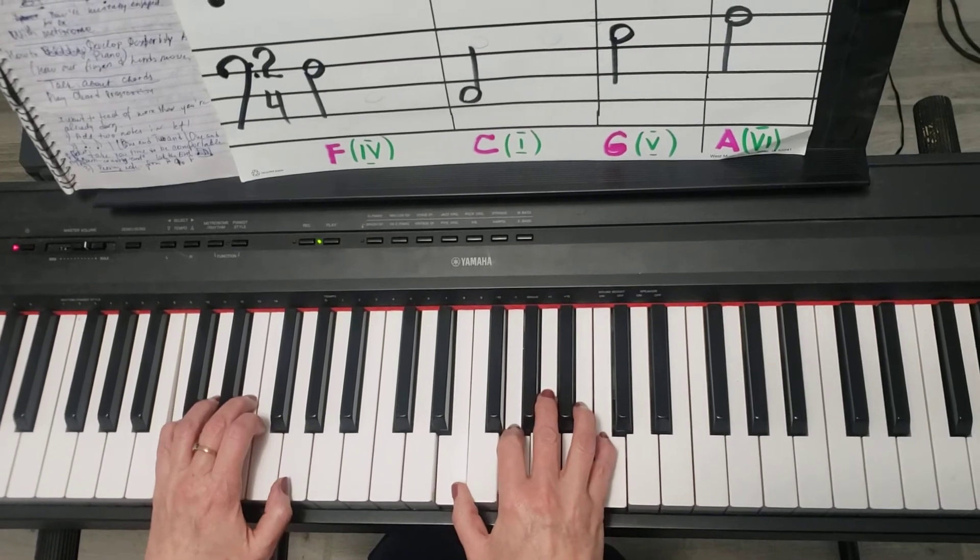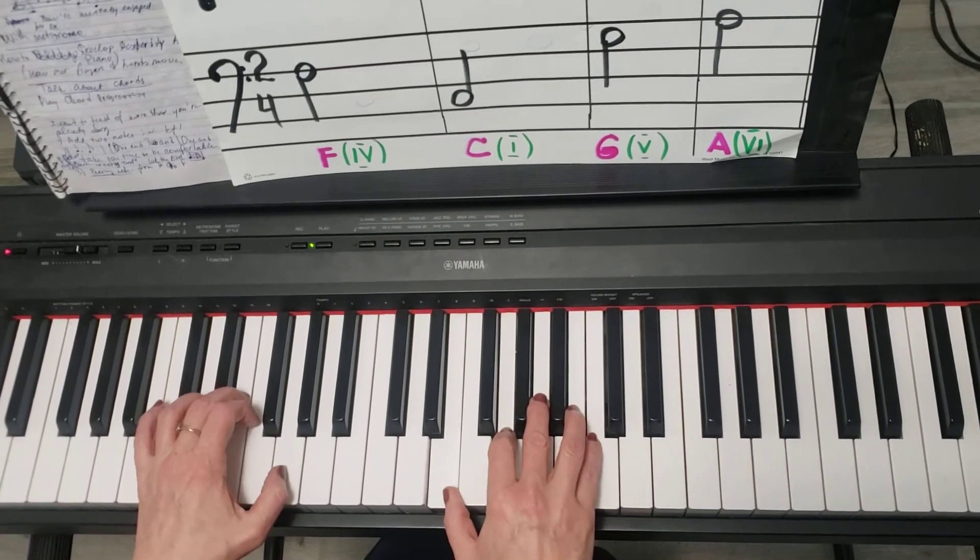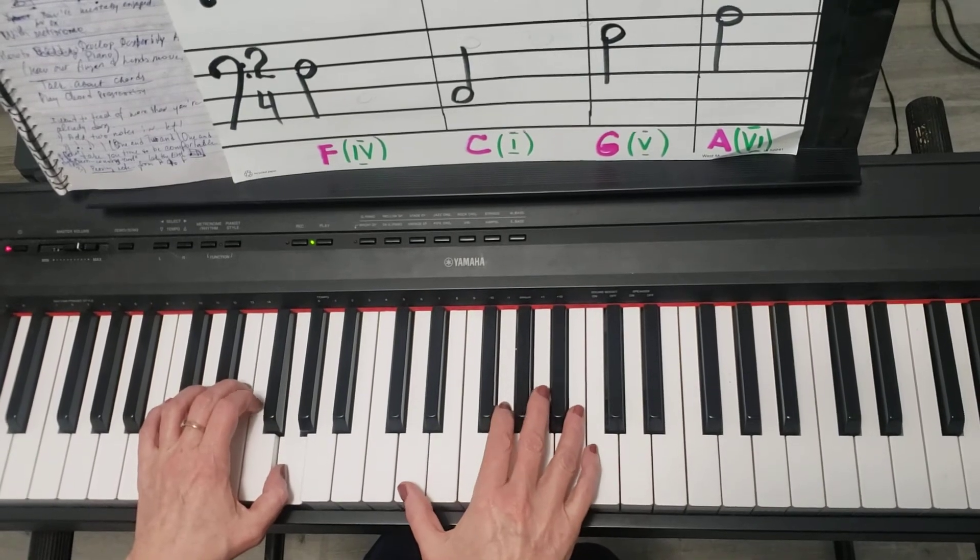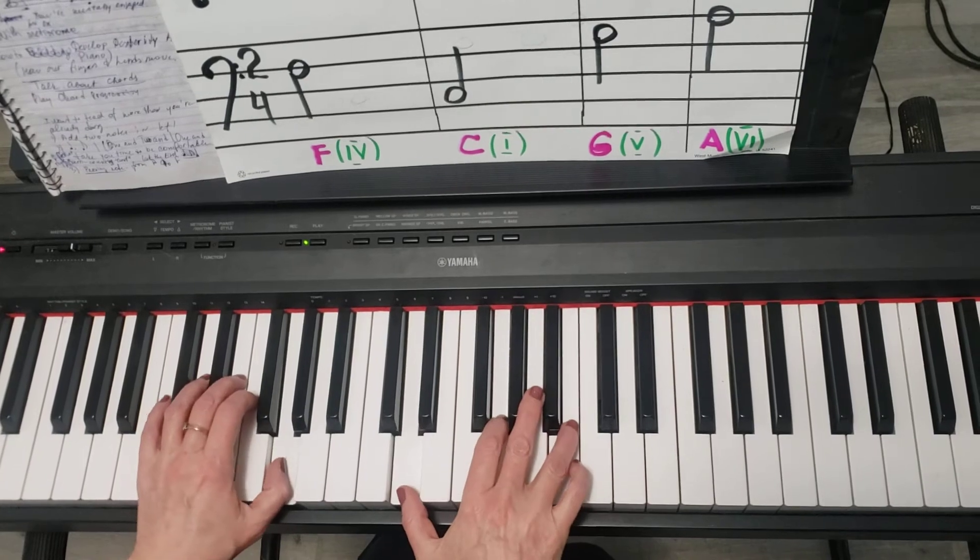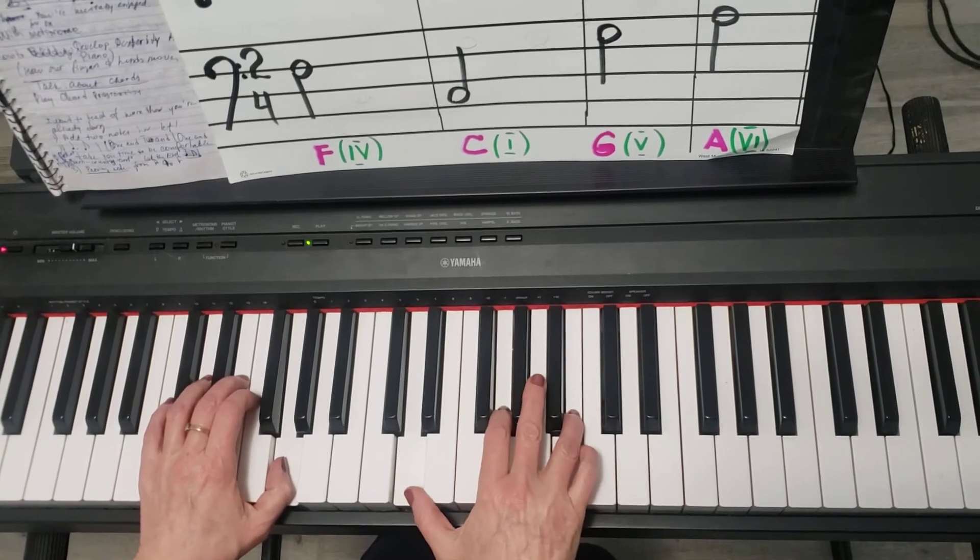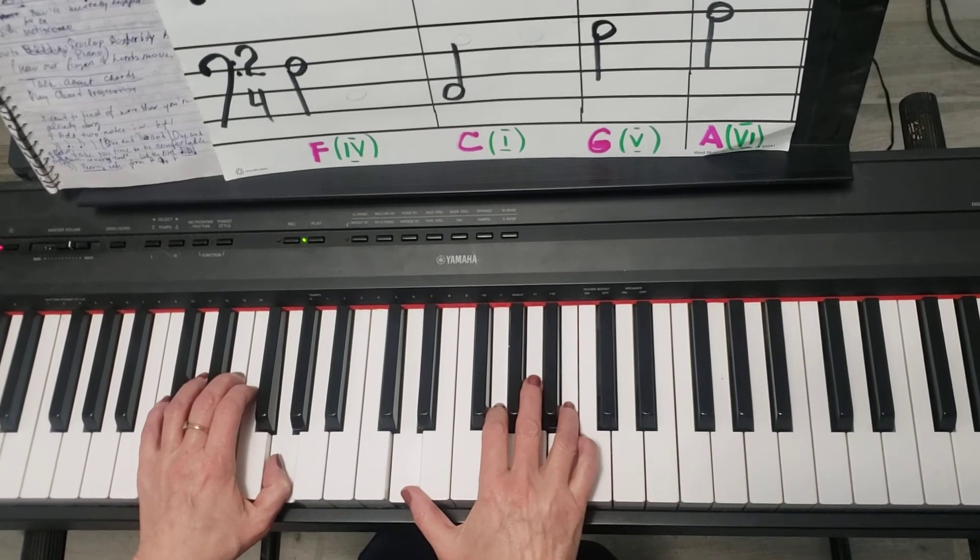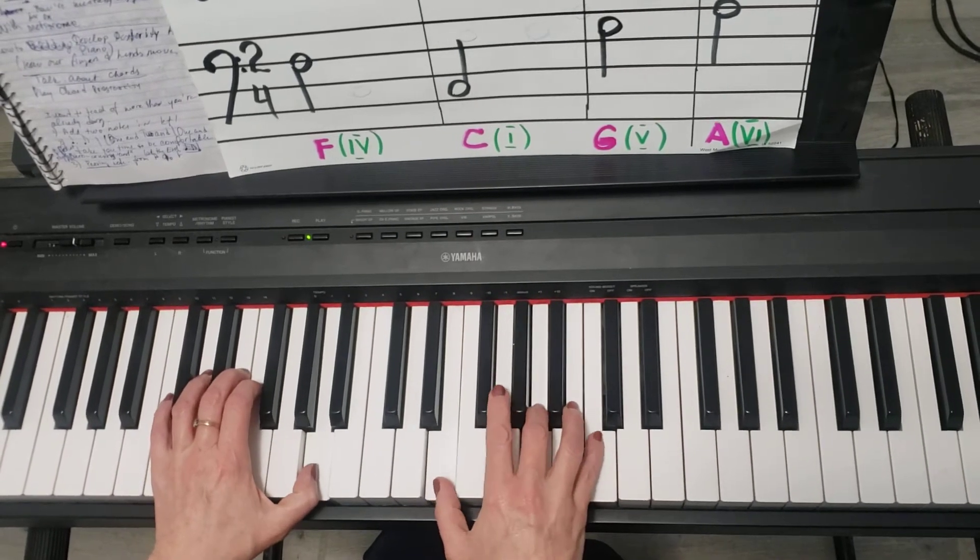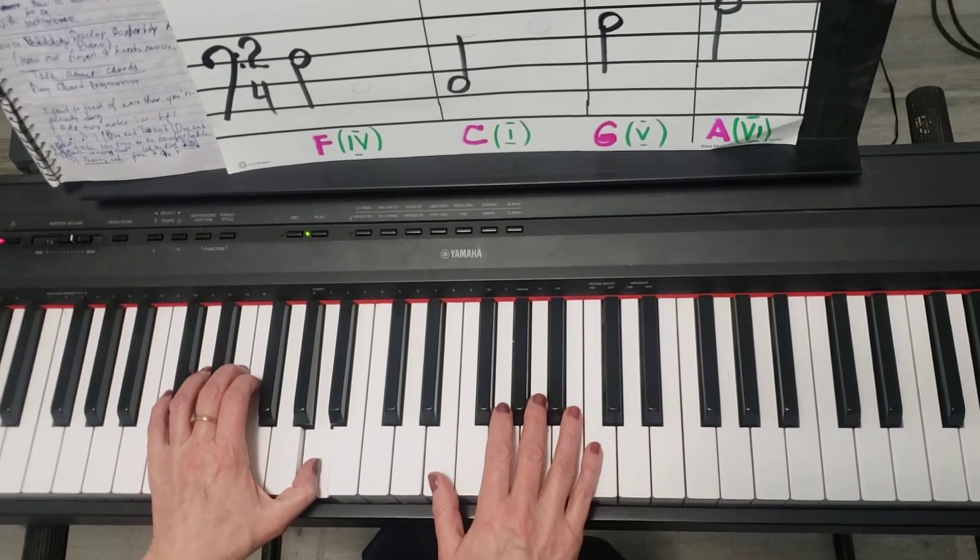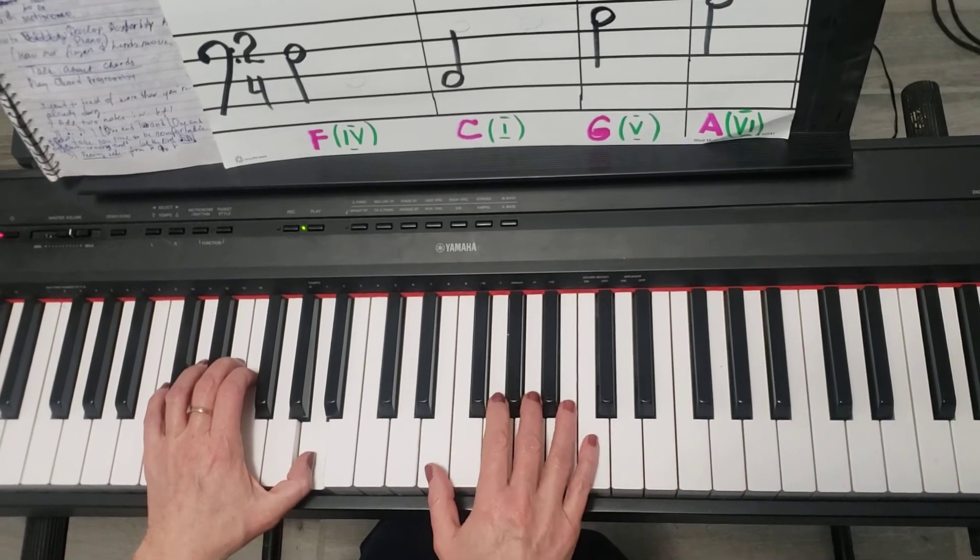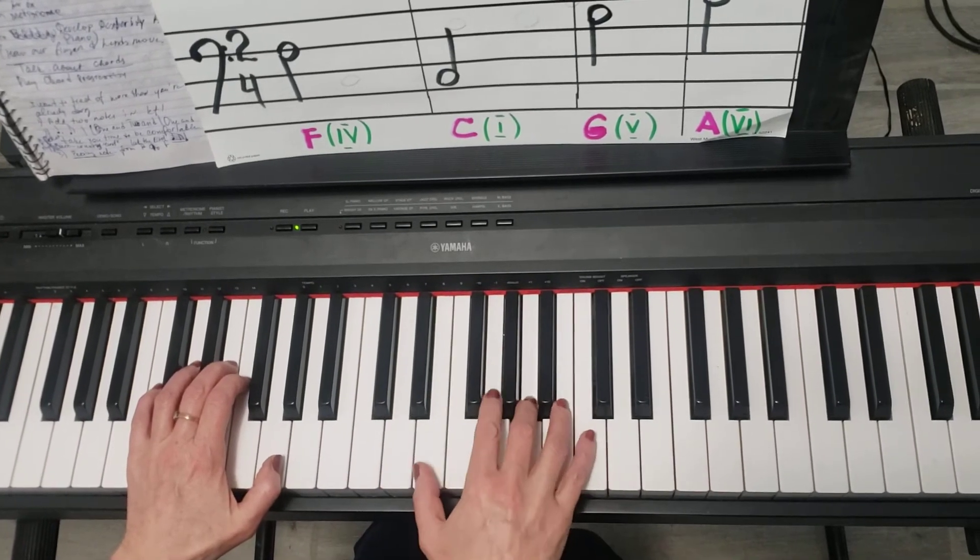Then the next chord, the left hand goes to G and the right hand is the second inversion of the G chord. D, G, B. And then we will move up to the last chord, A chord. Left hand is on A and the right hand is on the second inversion of the A chord. So instead of this chord, it goes to this chord.